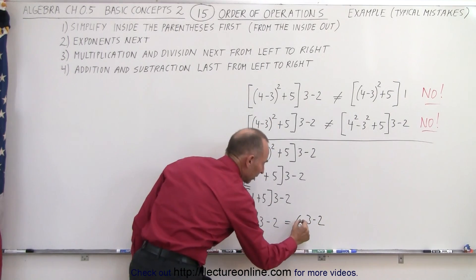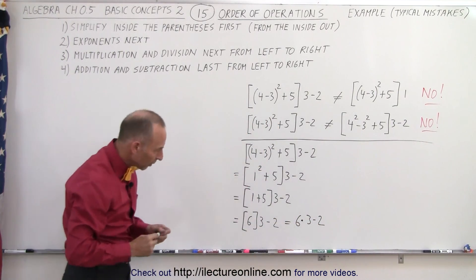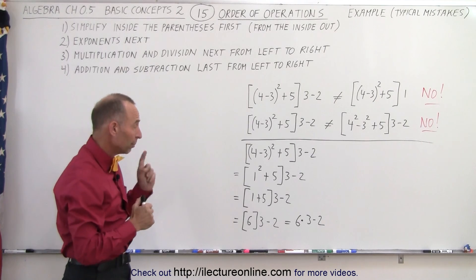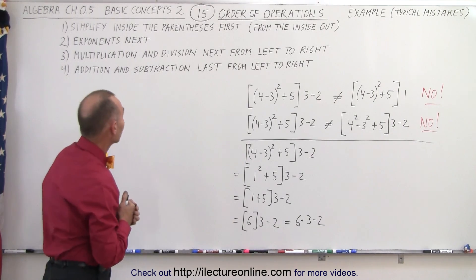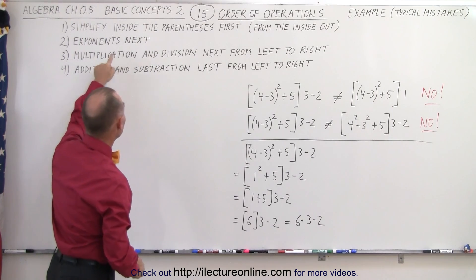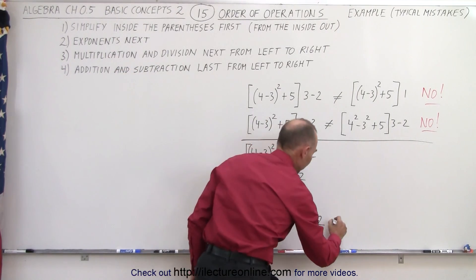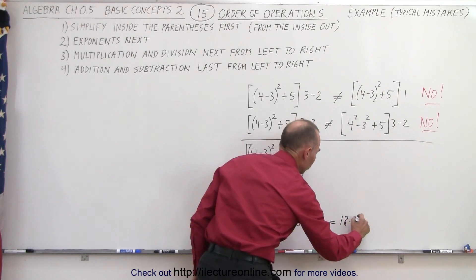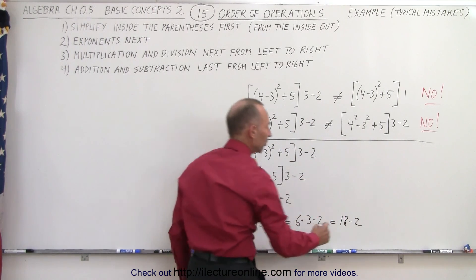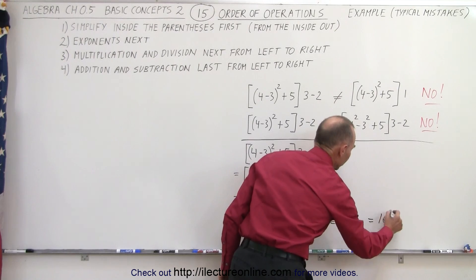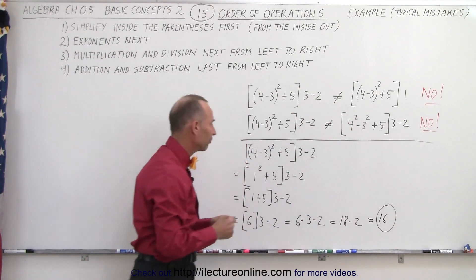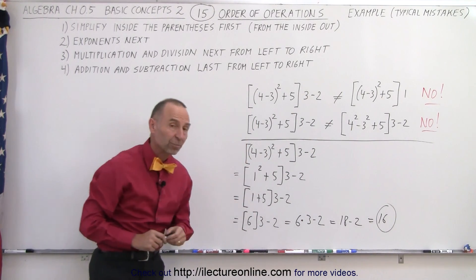So now we have one multiplication and one subtraction left. The order says we must do multiplication first, then subtraction. So 6 times 3 comes first. 6 times 3 is 18, minus 2, and finally 18 minus 2 equals 16, which is the simplified form of our initial expression.